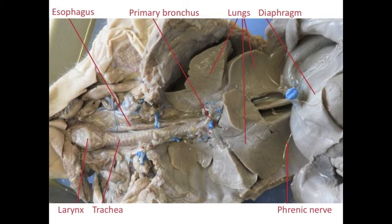The diaphragm, shown on the right-hand side, is the muscle that can contract and increase the volume of the thoracic cavity. It is innervated by the phrenic nerve.